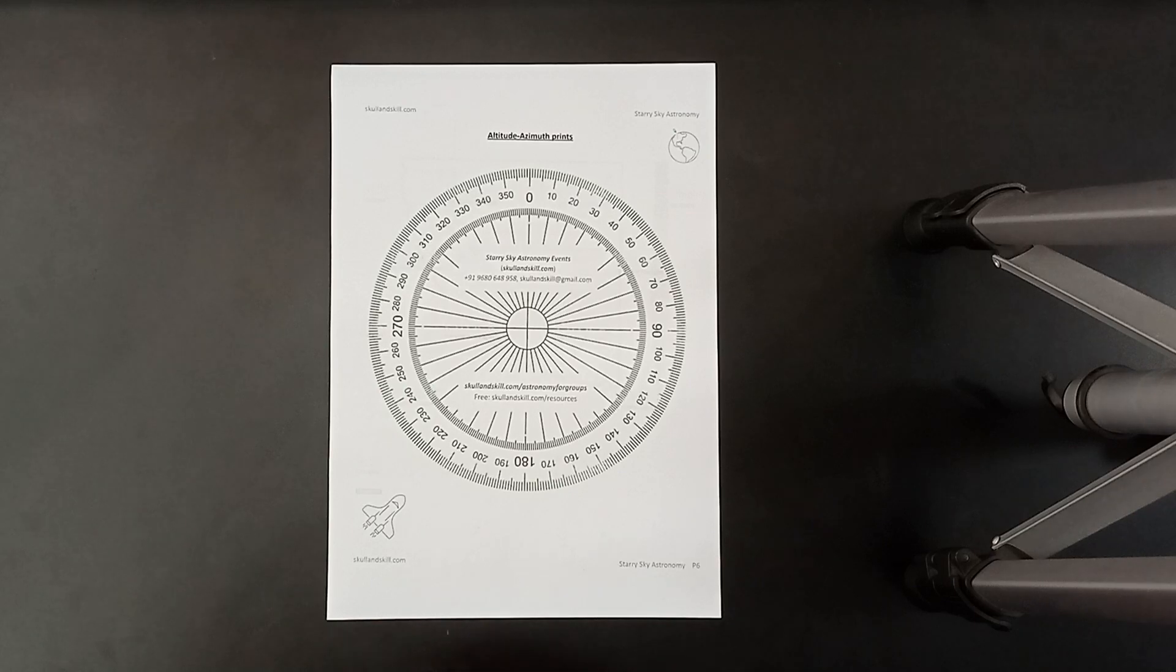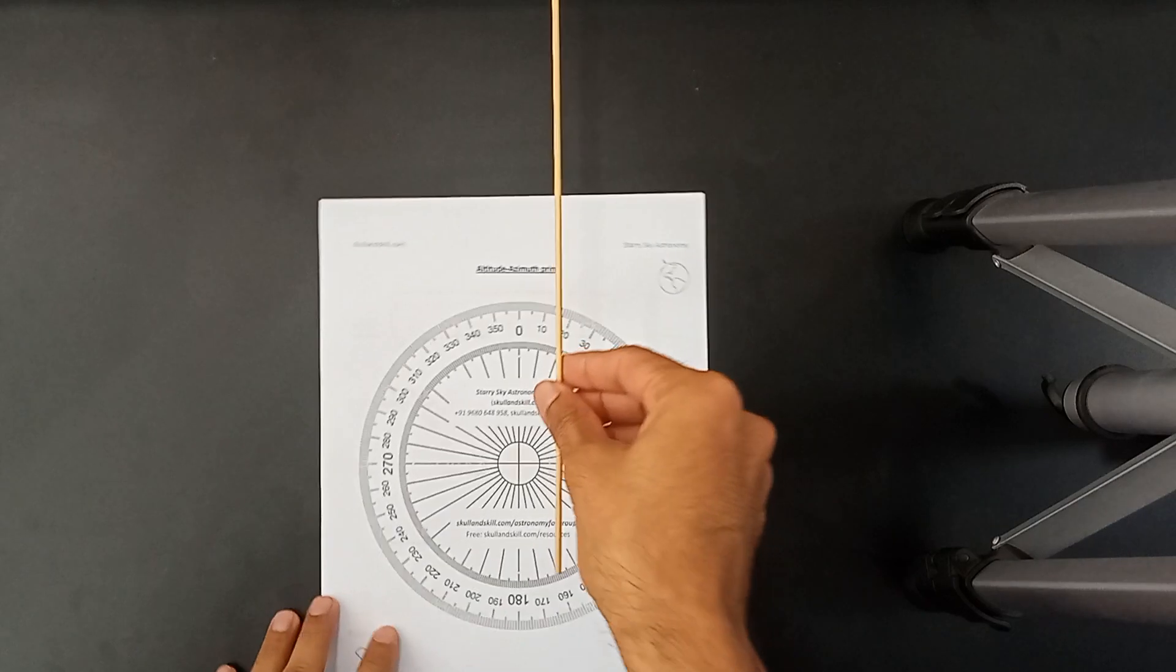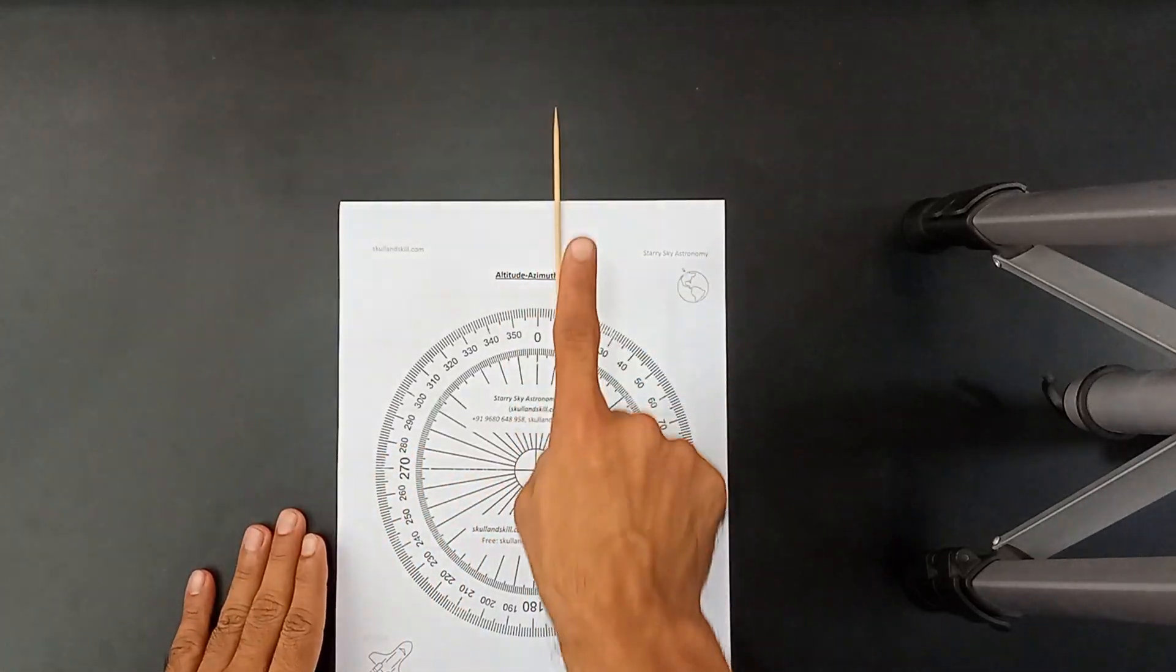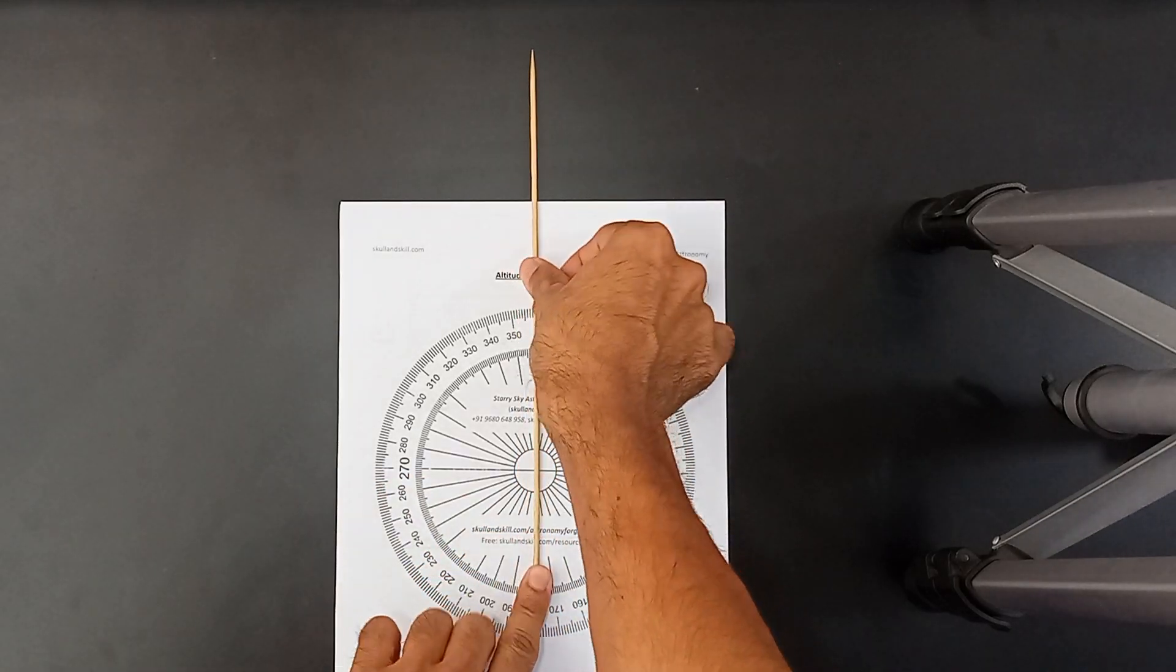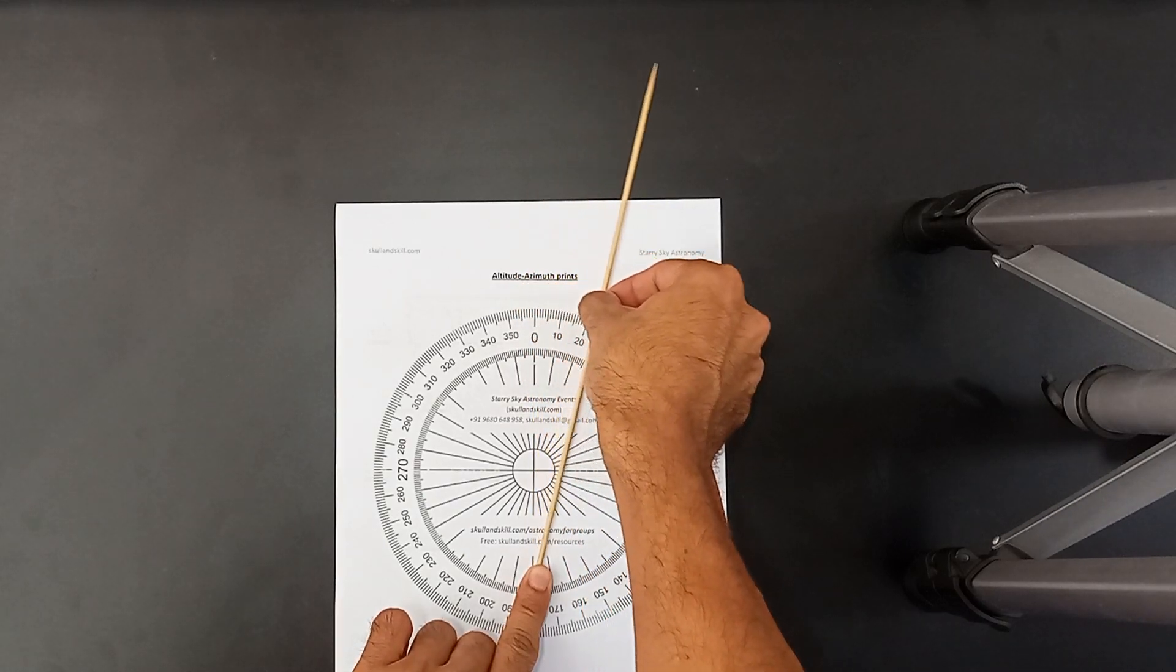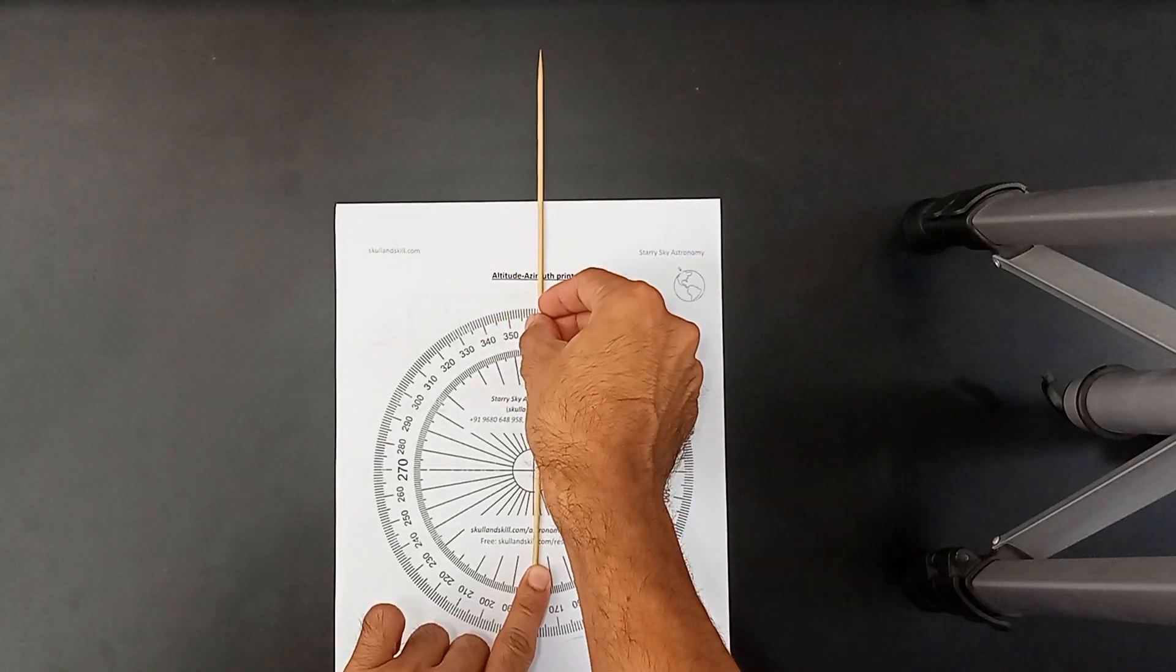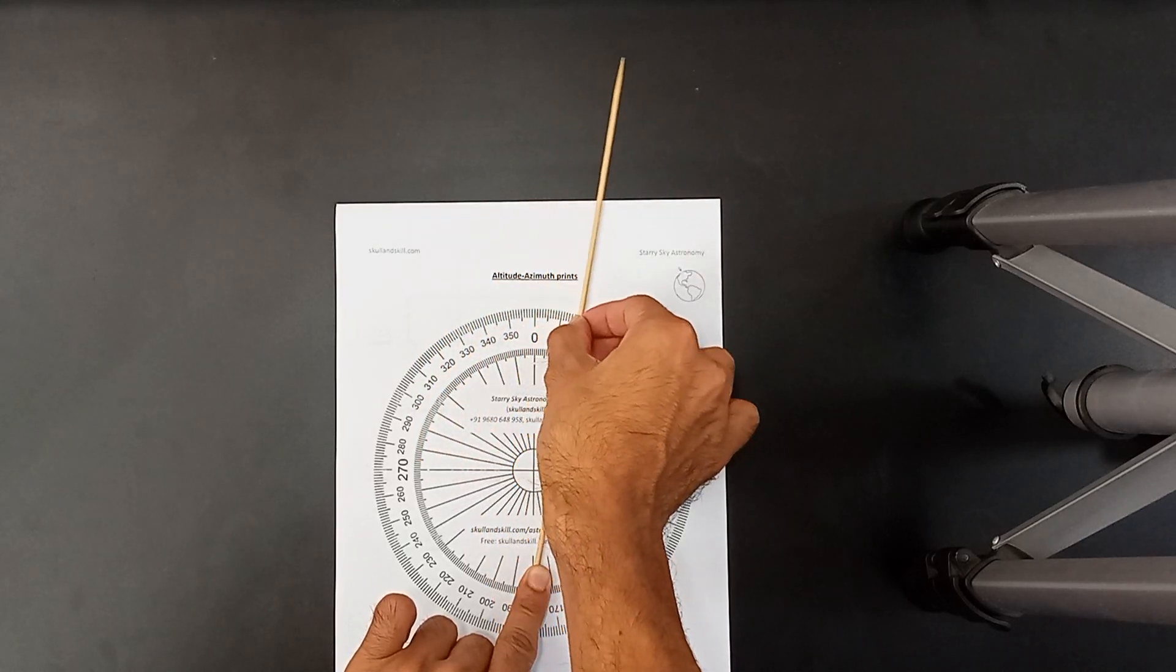First let's understand what altitude and azimuth means. Suppose you are standing right over here. Now this is the north direction. How much you have to move when you are looking at the north direction, at what angle you have to move towards the right side, this angle. If you are looking at the north, directly at the north, how much you have to move to the right side is called angle of azimuth.